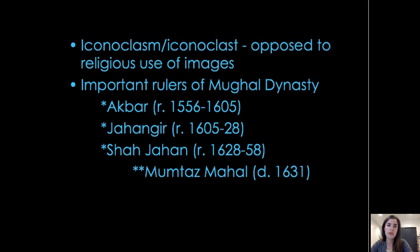Starting off with the term iconoclast — these were Muslim rulers following the faith of Islam, which tends to avoid representations of living beings: humans, animals, things that were created. The idea is that creation of living things is the role of God, not something that artists need to do. That's a key difference from Hinduism, where we see a lot of representation of gods, deities, and the human form — we're not really going to see that in the Mughal period.